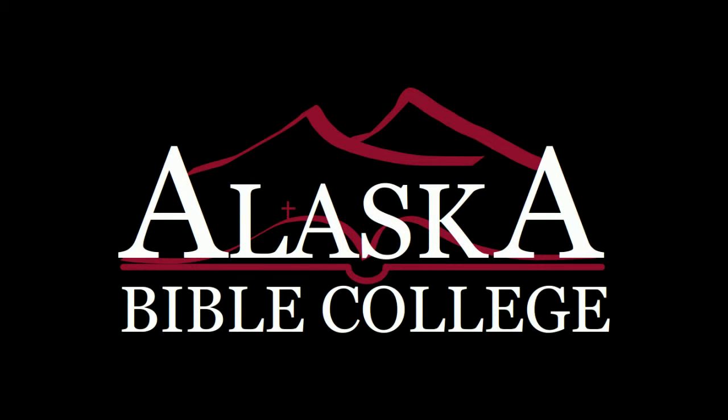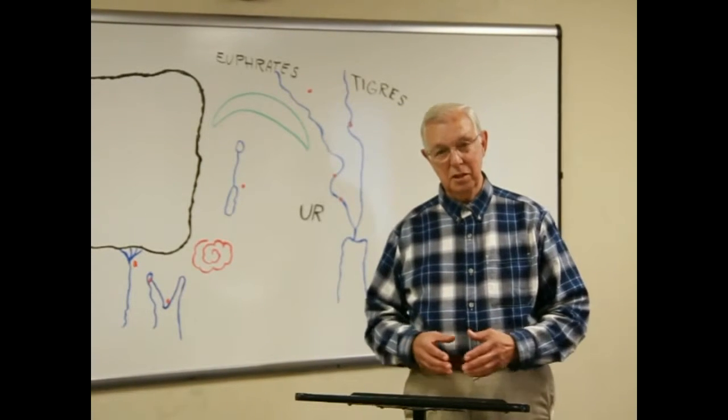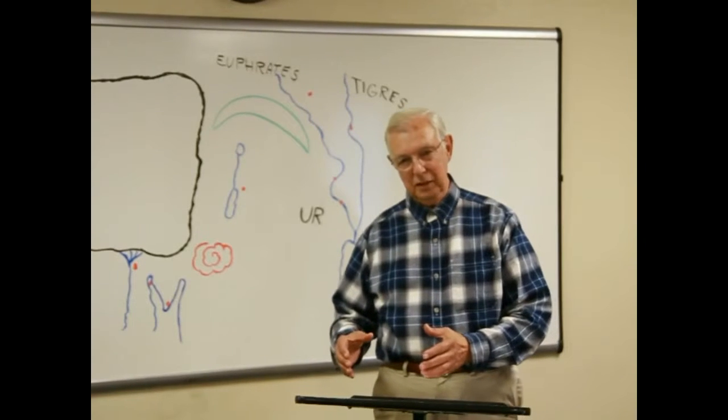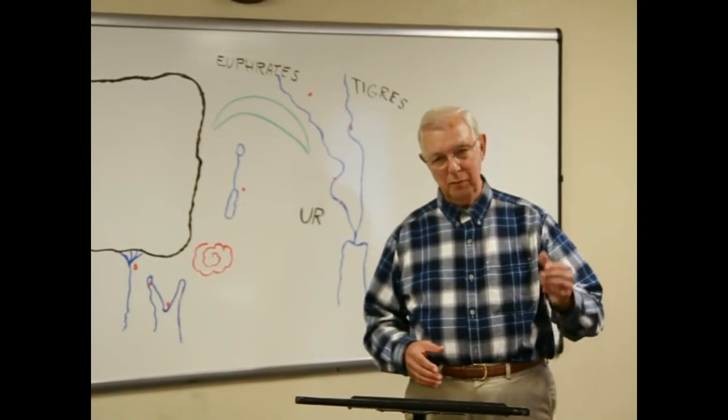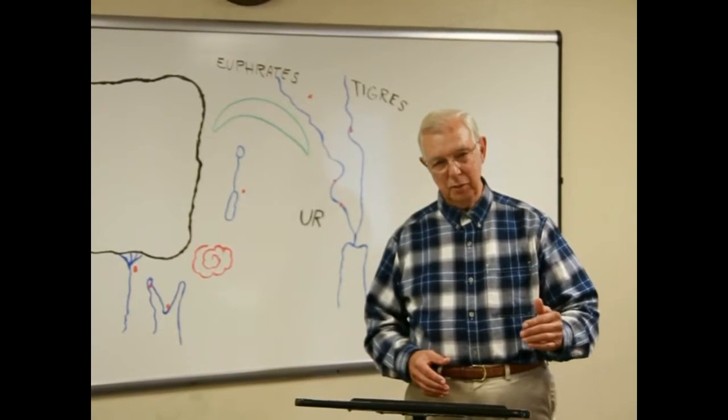Welcome to a part of the class on Old Testament Survey. We begin in the Old Testament where there are 66 books, 39 in the Old Testament and 27 in the New Testament. We have a sequence of numbers to remember: 5, 12, 5, 5, 12.